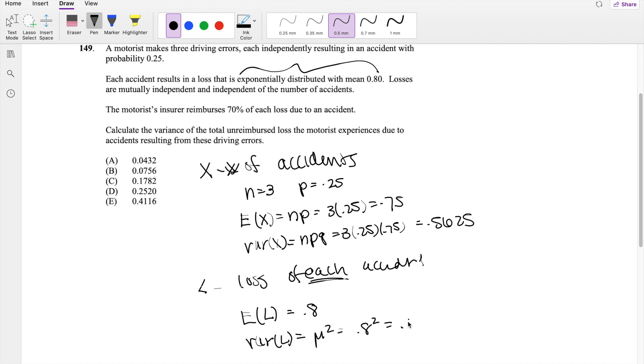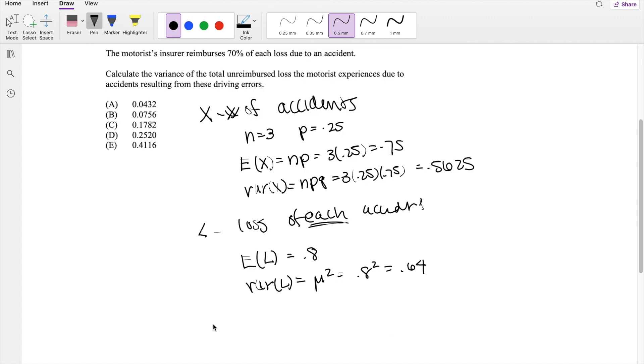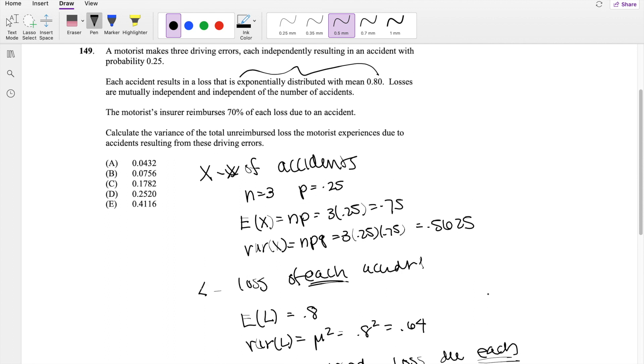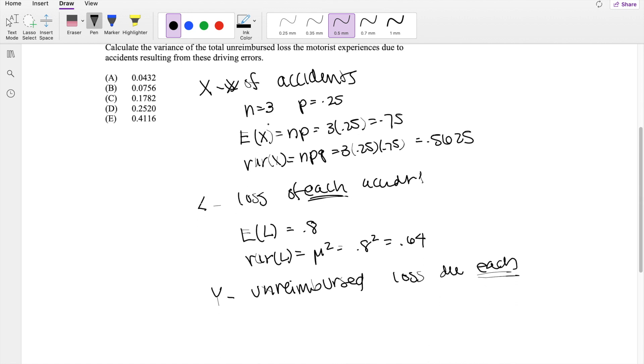Let's let Y be the unreimbursed loss due to each accident. Then because we know that 70% is reimbursed, we know the unreimbursed part is 0.3. So Y is equal to 0.3 times L.